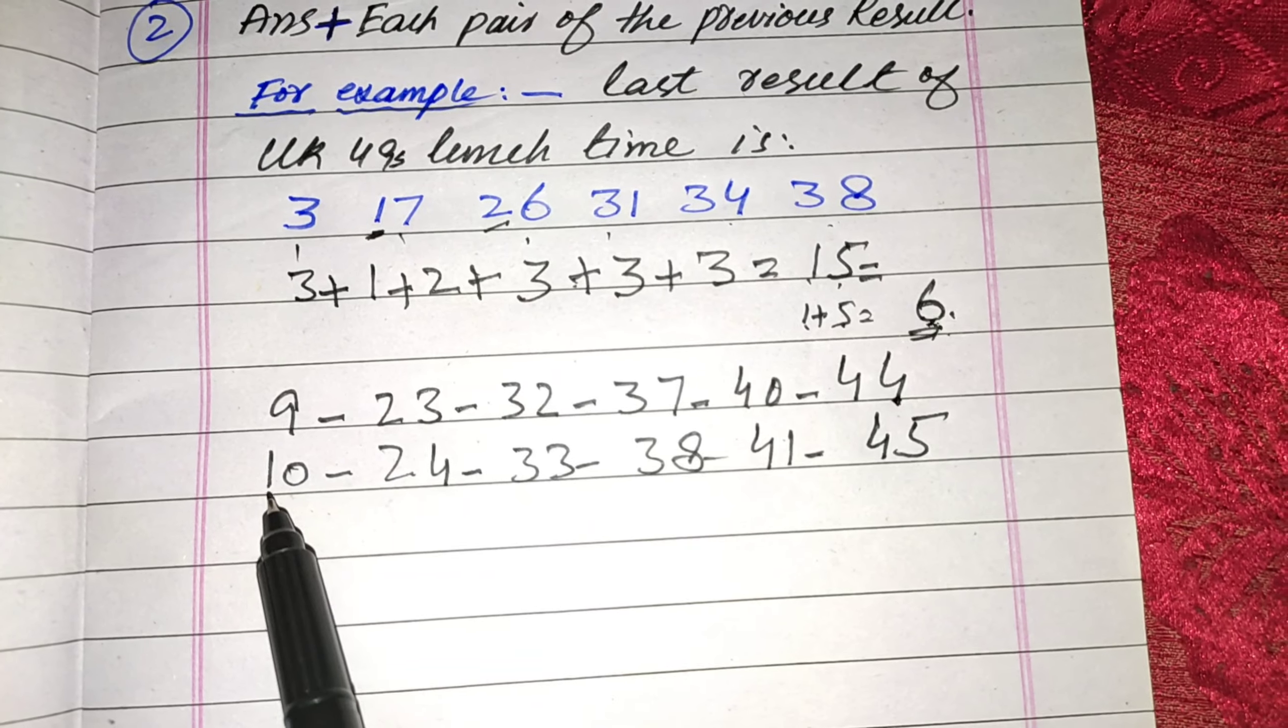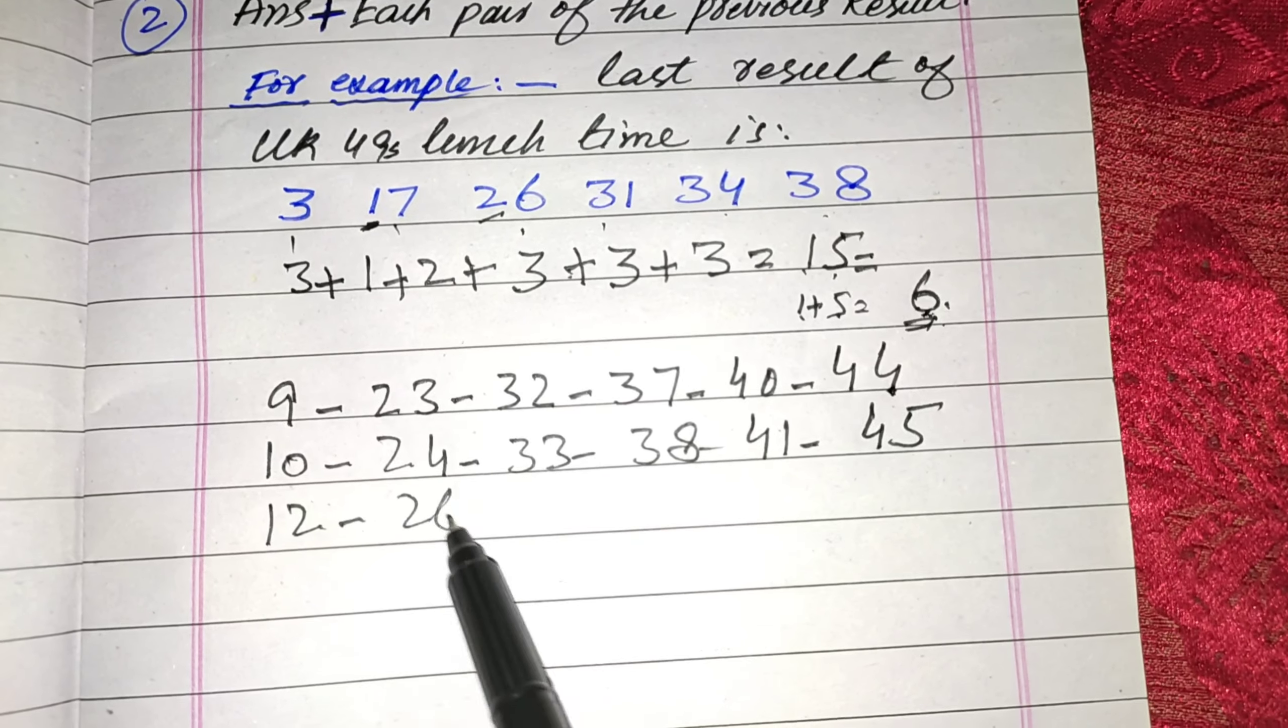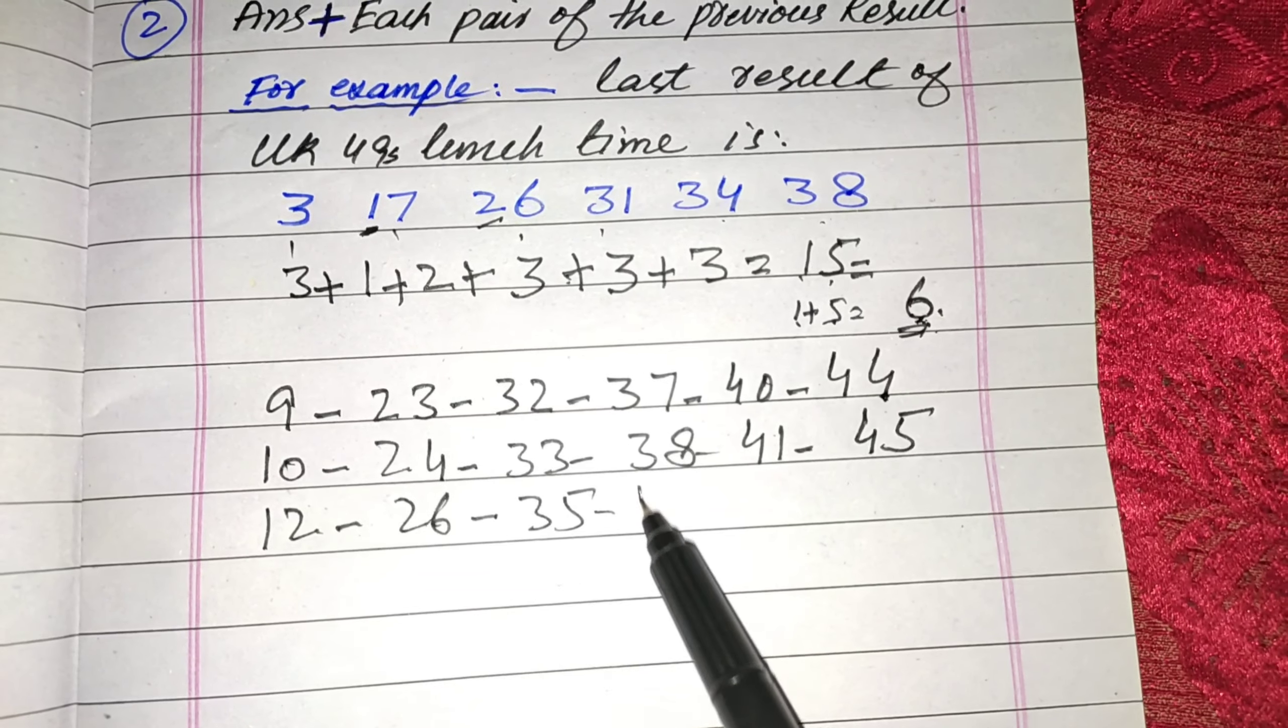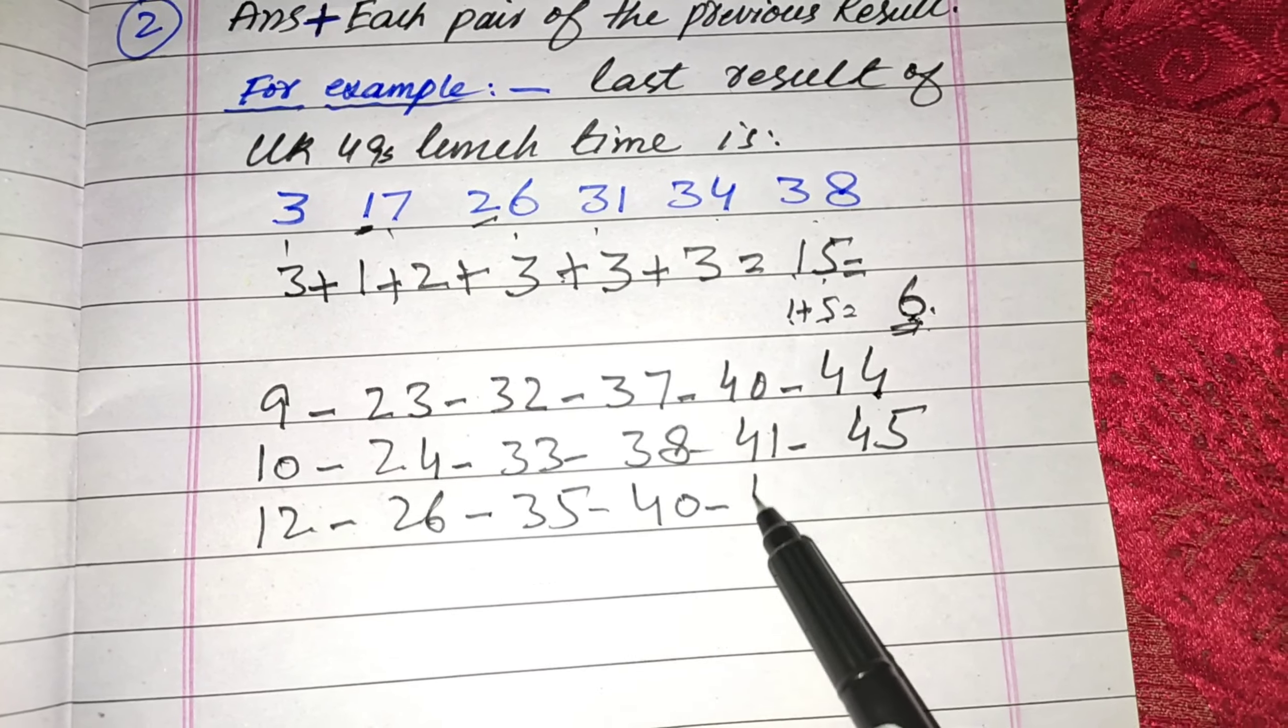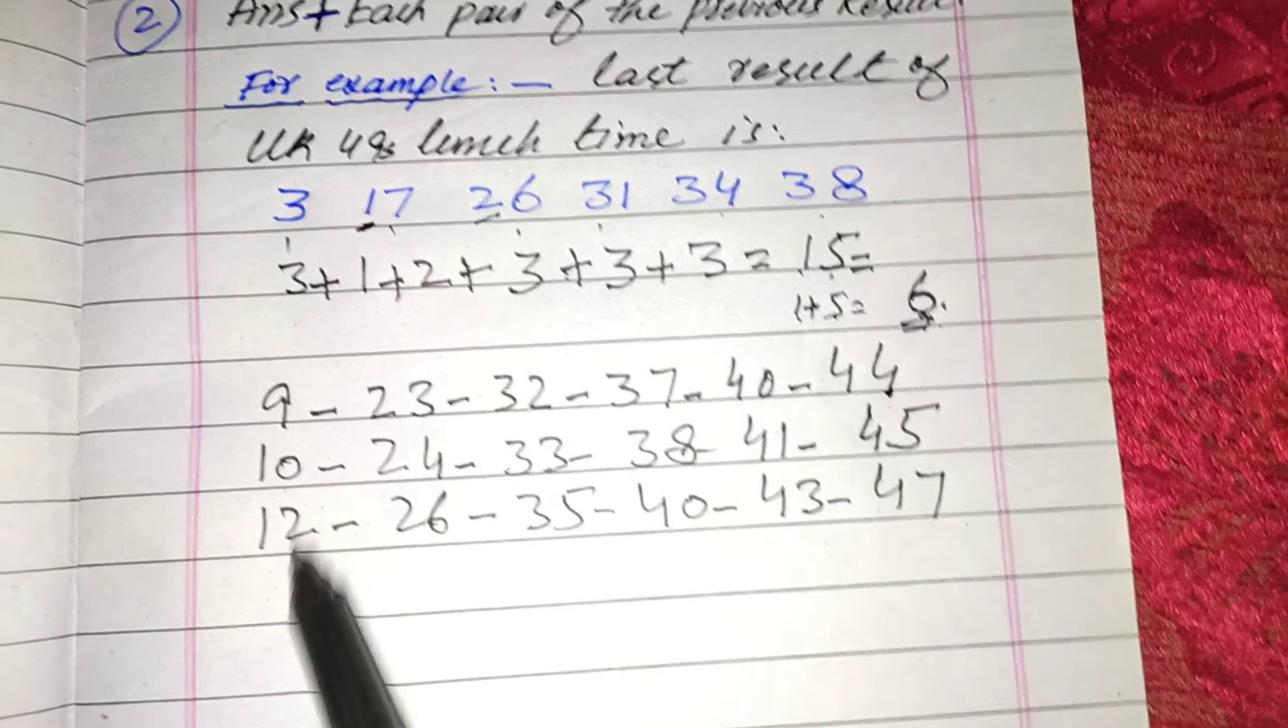Increase 2 from 10 is 12, increase 2 in 24 is 26, 35, 40, 43, and 47.